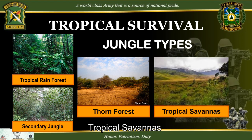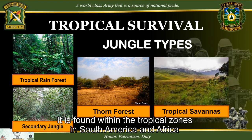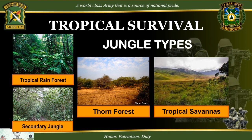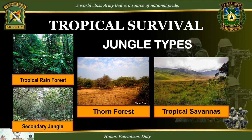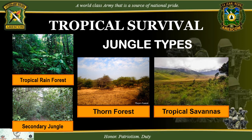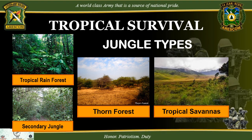Tropical Savannas are found within the tropical zones in South America and Africa. They look like a broad, grassy meadow with trees spaced at wide intervals. They frequently have red soil and grow scattered trees that usually appear stunted and gnarled like apple trees. Palms also occur on savannas.